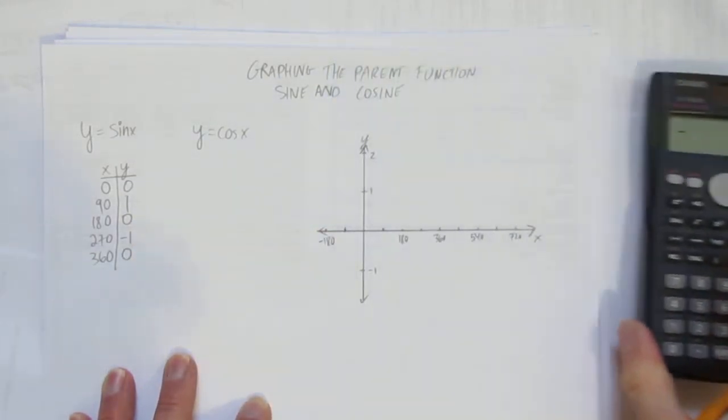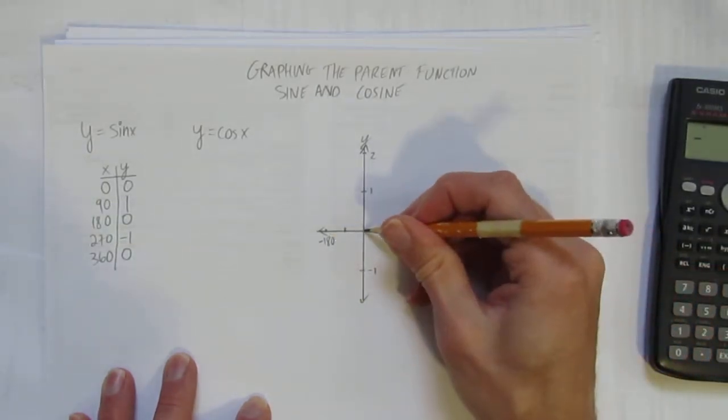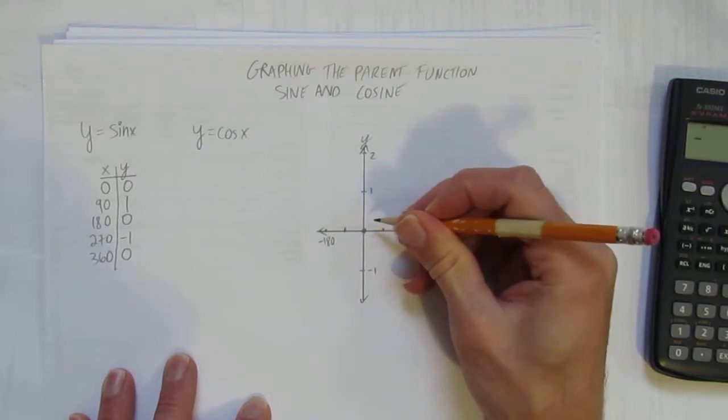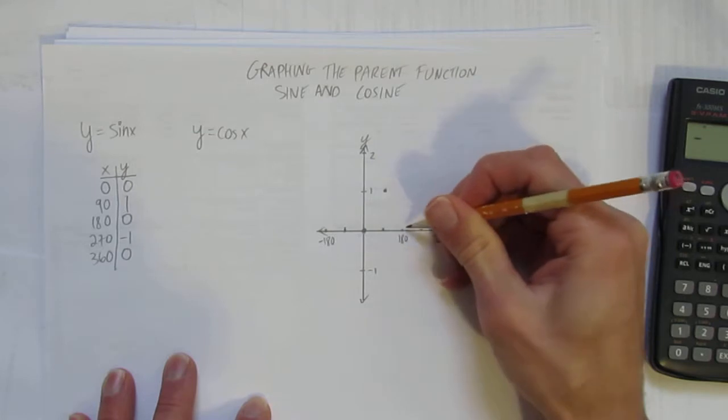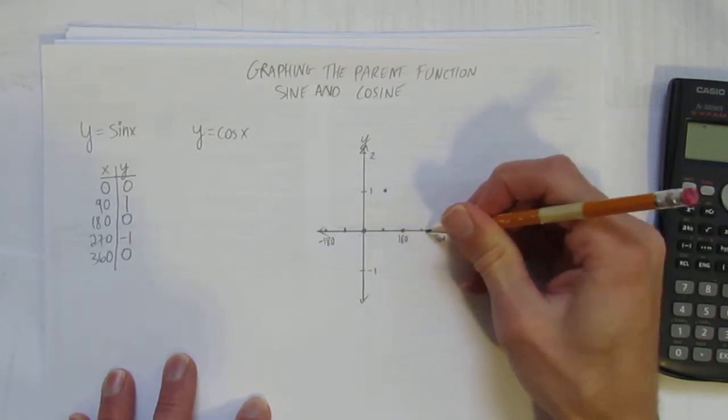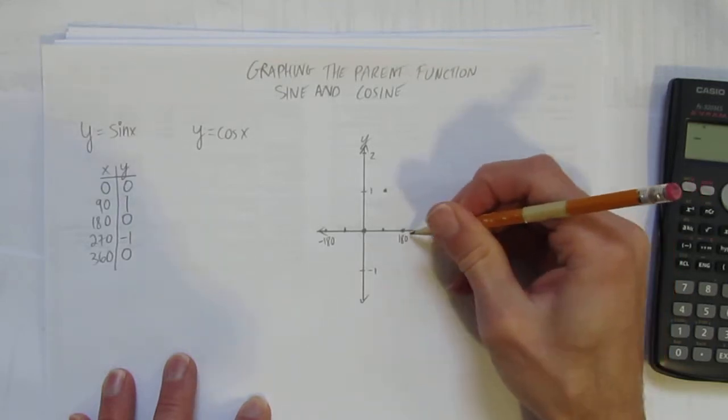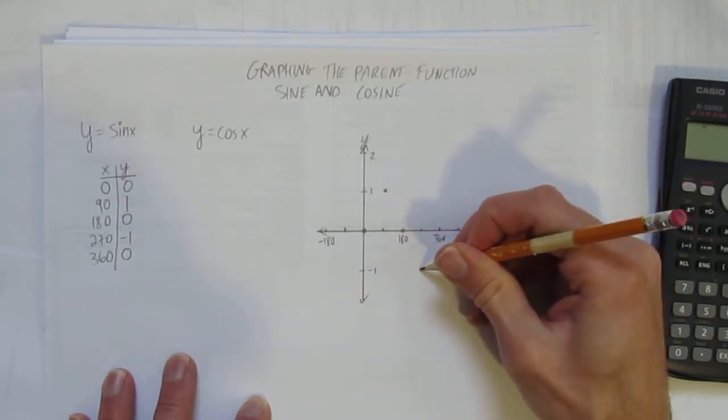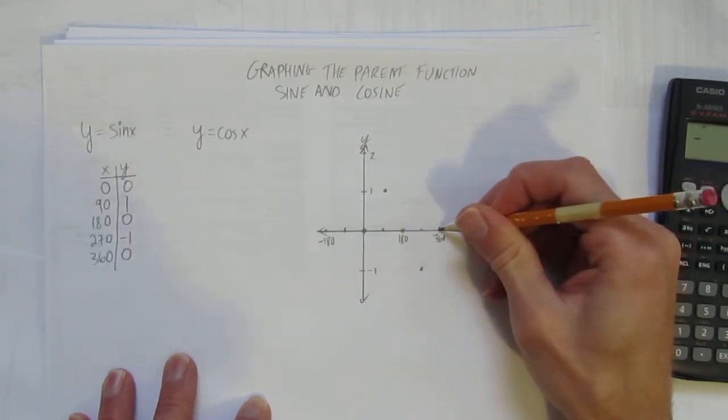Let's graph that. I already had a graph prepared here, so we can just start putting those values. The sine starts at 0, and at 90 degrees goes up to 1. At 180 degrees comes back down to 0. At 270, remember to label every second tick, that's at negative 1. And then at 360, it's back to 0.